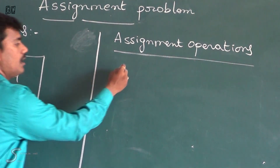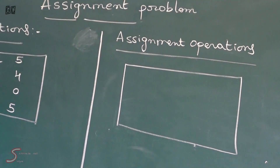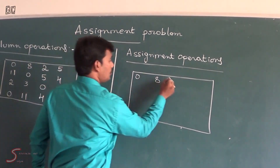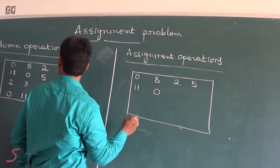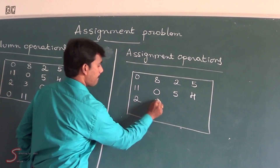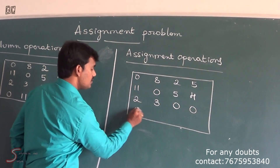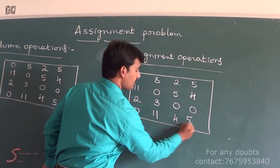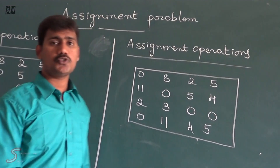From the column operations we are going to perform the assignment operation. The resulting matrix is: Row A: 0, 8, 2, 5. Row B: 0, 0, 5, 4. Row C: 2, 3, 0, 0. Row D: 0, 11, 4, 5. For this assignment operation we have specific notations.